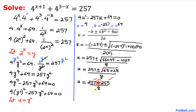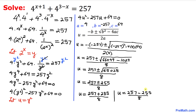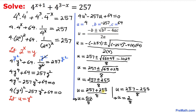Splitting along the plus and minus sign: u = (257 + 255)/8 = 512/8 = 64, and u = (257 − 255)/8 = 2/8 = 1/4. So our two values of u are 64 and 1/4.